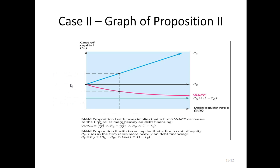In the next video, we'll take a look at case three, where we add bankruptcy costs, and this is a much more interesting case. But in this case, the optimal capital structure is to use all debt to finance the firm.